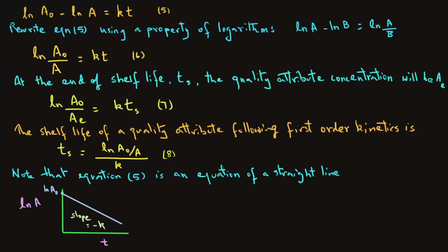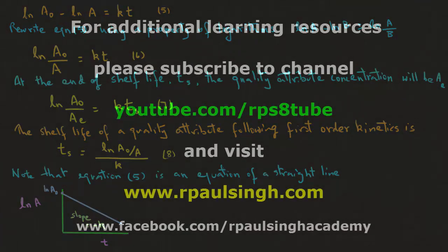So, if we obtain a value of rate constant K, then, by substituting it in equation 8, we can determine the shelf life. And we will see that in an example in a different tutorial.